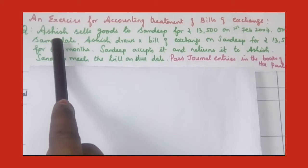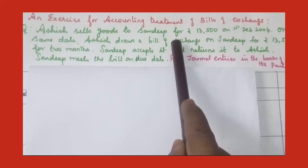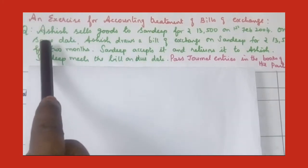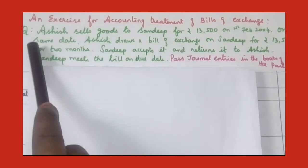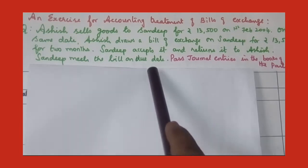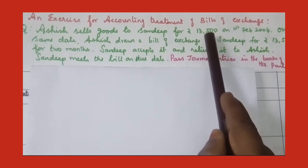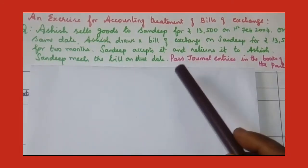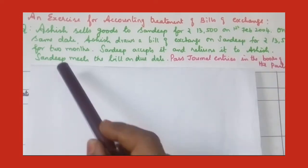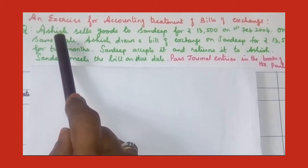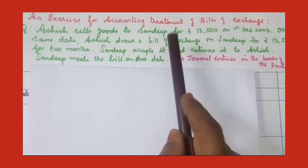When the drawer prepares the bill and gives it to the drawee, the drawee has to accept it by signing the bill and return it back to the drawer. So Sandeep, the drawee, is accepting it and returning it to the drawer. And Sandeep meets the bill on the due date — after 2 months, Sandeep pays the bill of Rs. 13,500 to the drawer Ashish. We have to pass journal entries in the books of both parties — Ashish the drawer and seller, and Sandeep the drawee and purchaser.